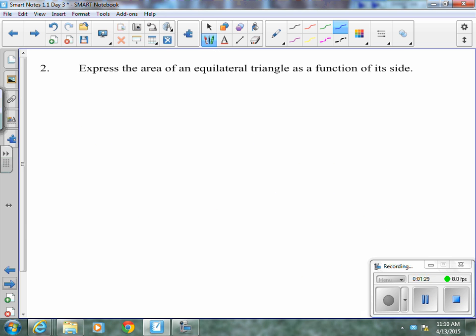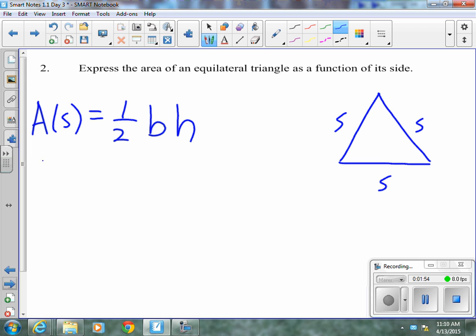Now, express the area of an equilateral triangle as a function of its side. This is a little bit interesting. So we have an equilateral triangle. We'll label the side S. Typically, the area of a triangle is 1 half base times height, but we want it in terms of S. So maybe we should write this as A of S.